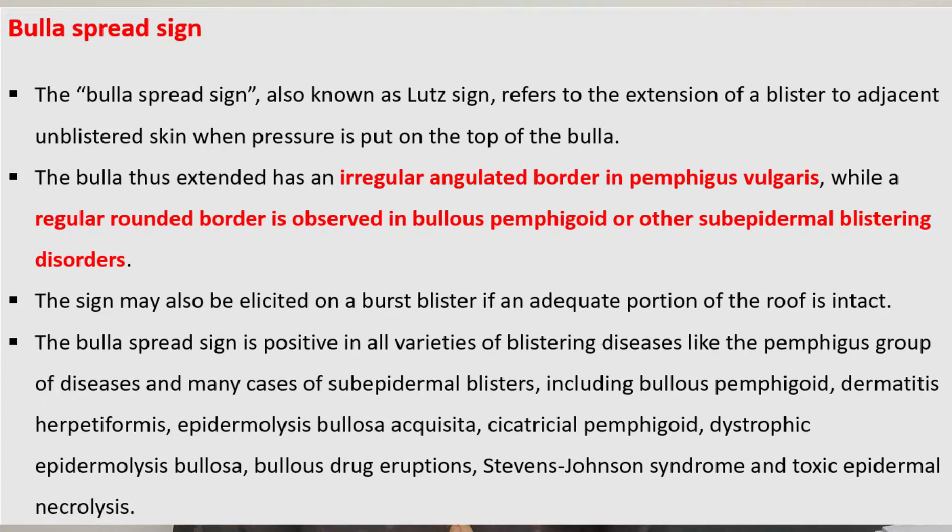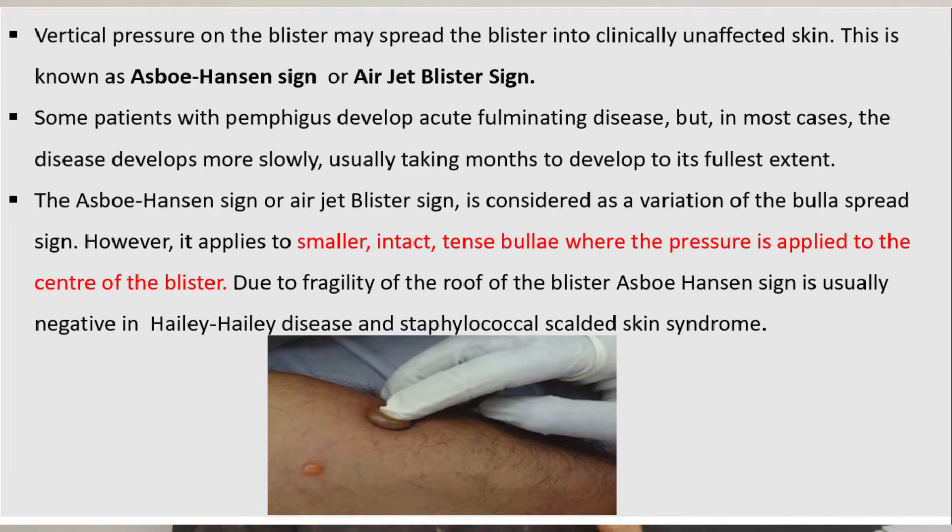There is a variant of bulla spread sign known as Ashbohenson sign or air jet blister sign. It is similar to bulla spread sign but is seen in small tense bullae or vesicles. Instead of applying pressure from the edge, you apply perpendicular pressure from the center of the bulla, causing it to spread to the normal surrounding skin.